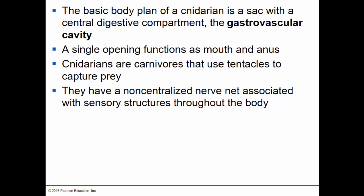Cnidarians have a very simple body plan — basically a sac with a central digestive compartment known as the gastrovascular cavity. 'Gastro' refers to digestion, and 'vascular' refers to the fact that water flows through it. A cavity is always a type of opening, so in cnidarians, food goes in and waste goes out through the same opening. That's one of the distinguishing features between the cnidarians and other more advanced animal groups. Cnidarians are carnivores — they use tentacles and stinging cells to capture, stun, paralyze, and consume their prey.